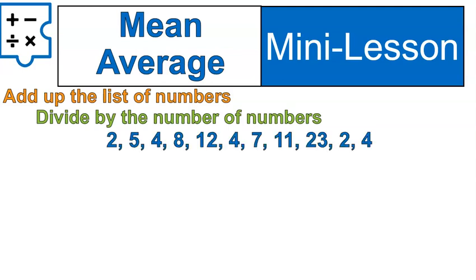If I have this list of numbers, you go, wow, that's not so bad. But if you have to add them all up, you're adding 2 plus 5 plus 4 plus 8 plus 12 plus 4 plus 7 plus 11 plus 23 plus 2 plus 4. It takes a little bit of time. Then after you've added them all up, then you need to divide by how many numbers are there.